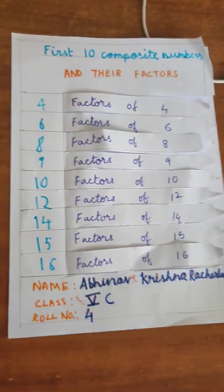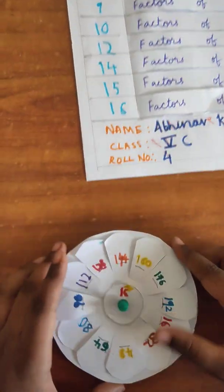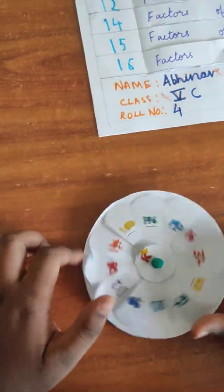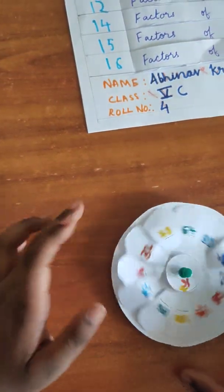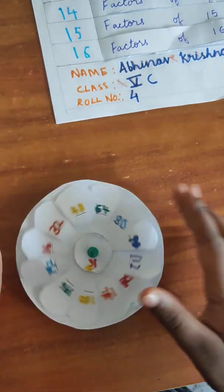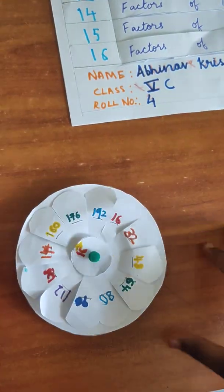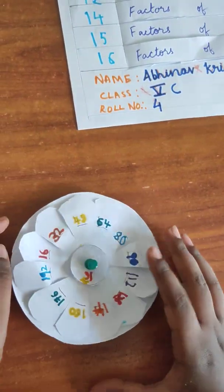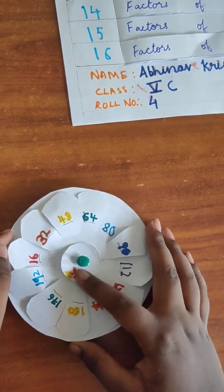Next stop, the dividing wheel. This dividing wheel has so many numbers which are the multiples of 16. Now, let's see what can be divided by 16.